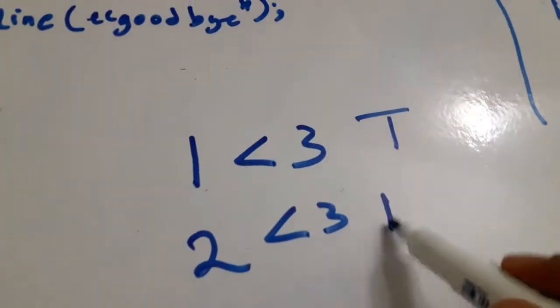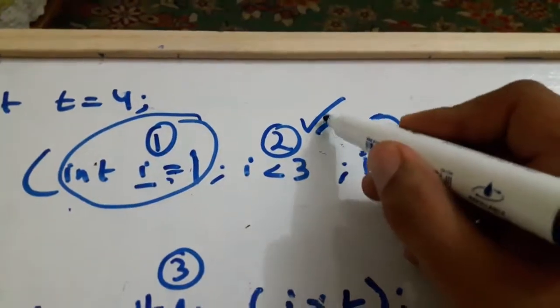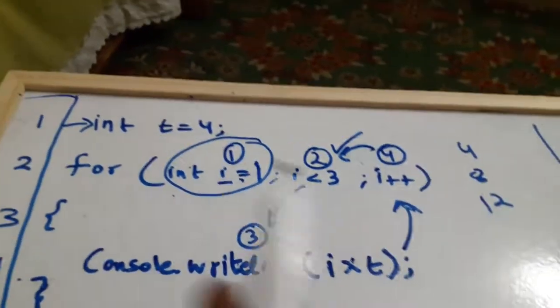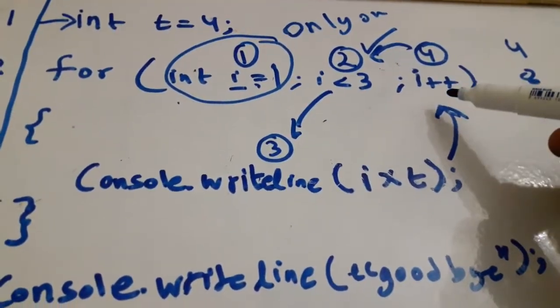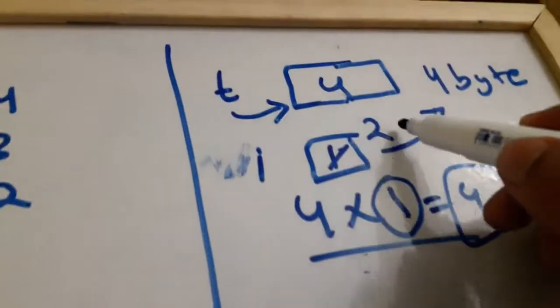Now we compare again: two is less than three — that is again true, so the loop body executes again. From the memory diagram, two times four equals eight, so the next output is eight. Then line five closes the block, and the increment runs again: i was two, two plus one equals three, so i is now updated to three.